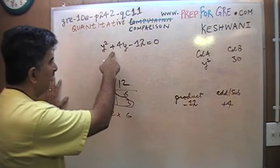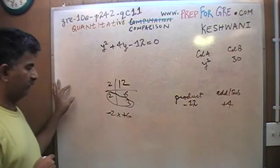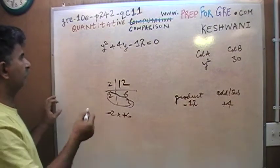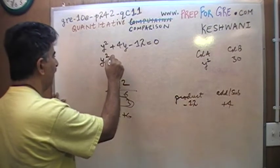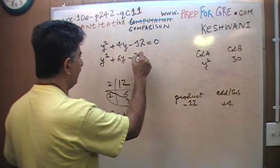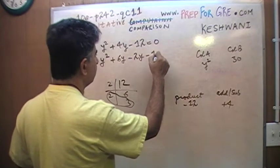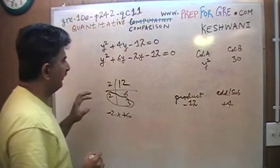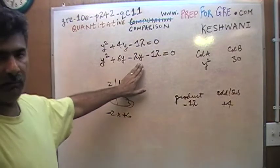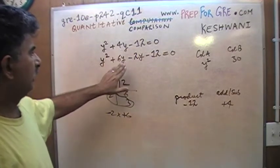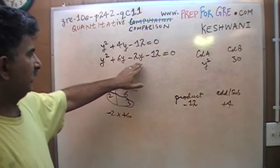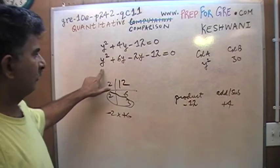So what we are dealing with here is not 4 times 3 but rather 2 times 6. And since I need a positive 4, this has to be positive and this has to be negative. So I have a positive 6 and a negative 2. As you can see, positive 6y and negative 2y is going to give me positive 4y, and positive 6y times negative 2y is going to give me negative 12y squared.